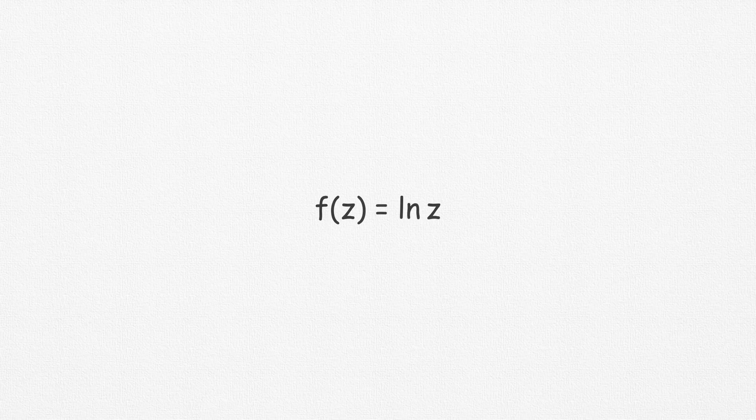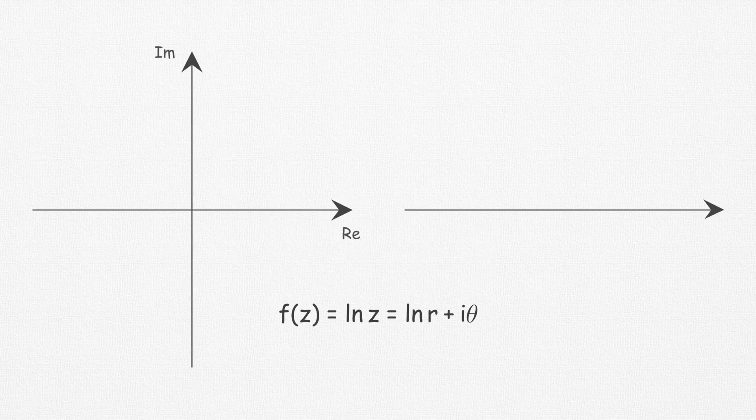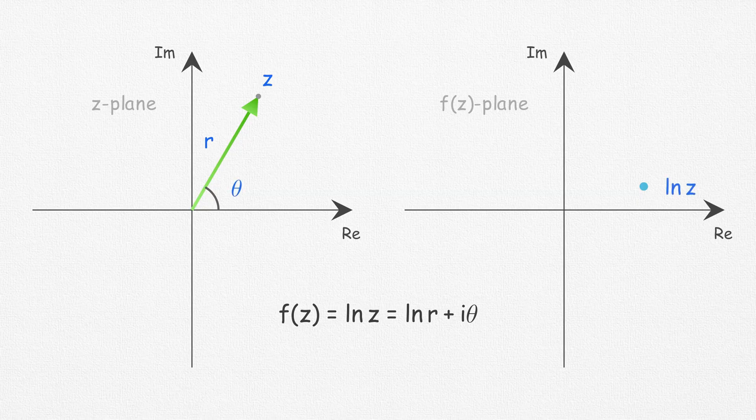Now let's talk a little bit about the complex logarithmic function. Using polar form, we can write ln z as ln r plus i theta. Next we map the complex number z on the z-plane to the function ln z on the f(z)-plane. For each point on the z-plane, we find the corresponding point on the f(z)-plane.